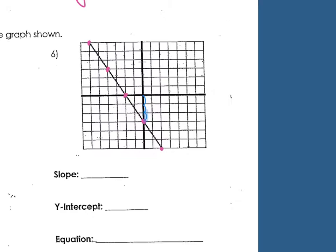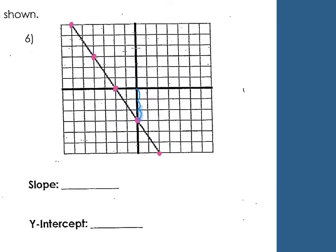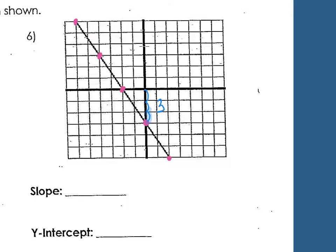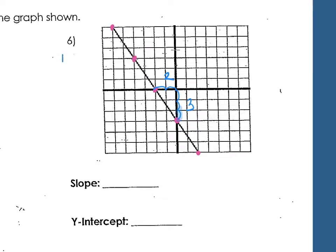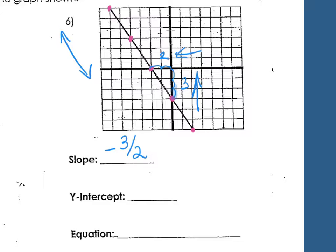So what'd you get? I skipped the y-intercept, I didn't mean to. But if I rise 3 and I'm going to run 2, and then look at that slope line, what kind of slope is it? It's negative. So negative 3 over 2 because rise over run.